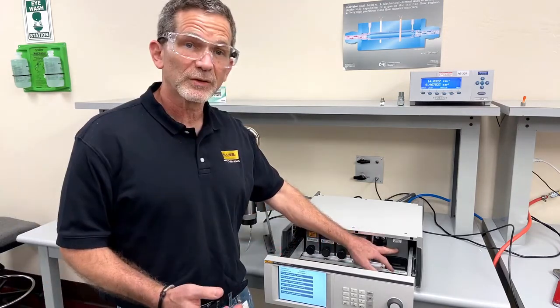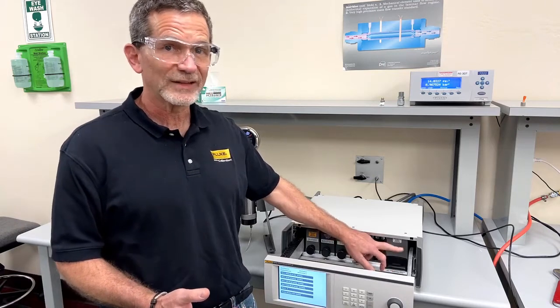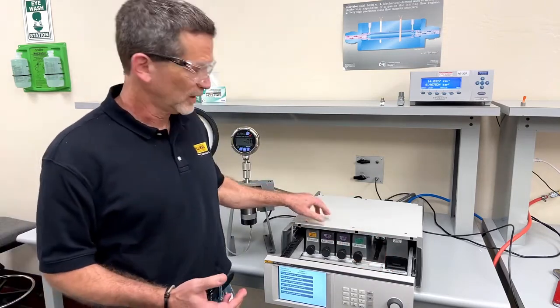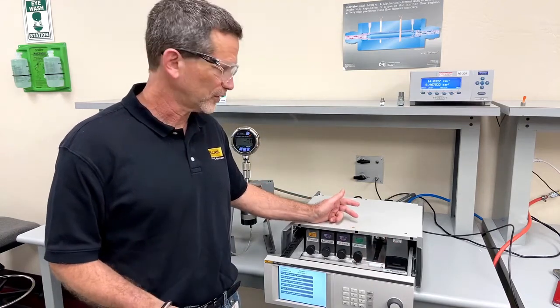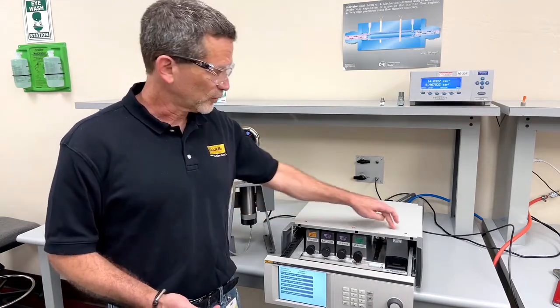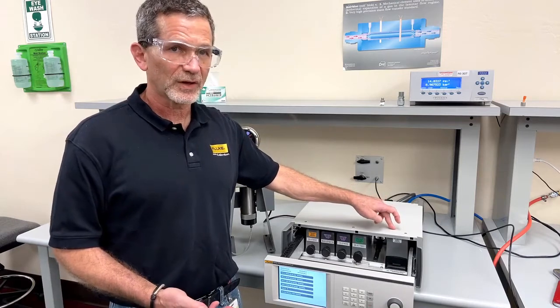The last module over here is the pressure control module. That's really the main difference between the three chassis. The pressure control module is what allows the controller to set the pressure. This is what happens to be a 6,000 PSI module.